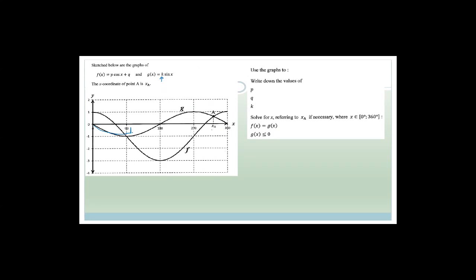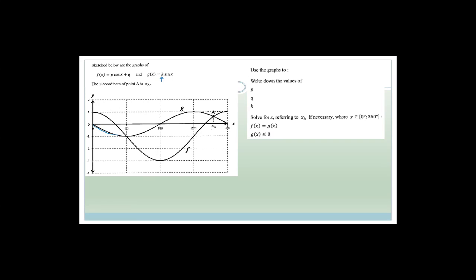This graph here is a sine graph. It looks like a normal sine graph going from 0 to 360 through 180 with an amplitude of 1. But normally at sine of 90 the amplitude is 1, not minus 1. So k is going to be negative 1.